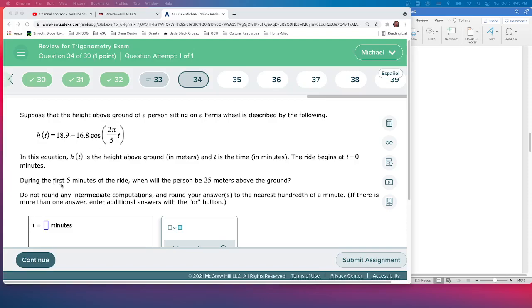So then the question is during the first five minutes of the ride, first five minutes. So T goes from zero to five. When will the person be 25 meters above the ground? Do not round any intermediate computations, round your answers to the nearest hundredth of a minute. There's more than one answer in traditional answer. So remember Ferris wheel goes in a circle. So there's probably many places, you know, at least so you go up, you're 25, you're down 25, for first five minutes, how many times is it going to go around?